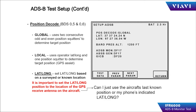A common question is: what is global versus local settings for position decode? Global uses two consecutive odd and even position squitters to determine target location. The local setting uses the test set-entered longitude and latitude, and one odd or one even squitter to determine target location.